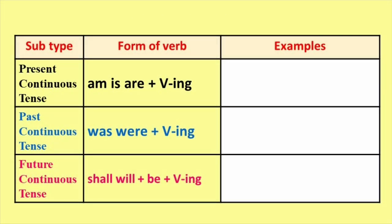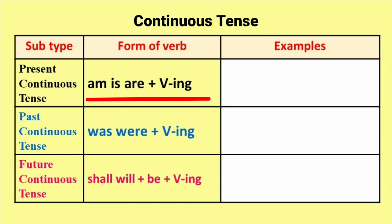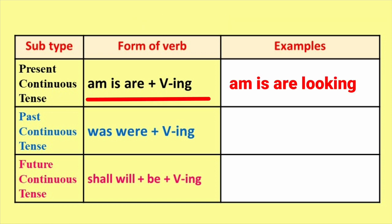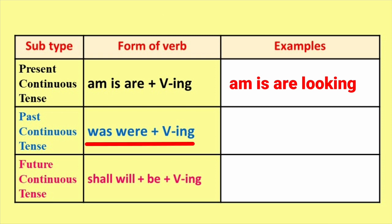Present Continuous Tense मधे Am, Is, Are plus Verb+ING म्हणजेच Present Participle रूप वापरतात. For example: Am / Is / Are + Looking. Past Continuous Tense मधे Was, Were plus Verb+ING. For example: Was / Were + Looking.